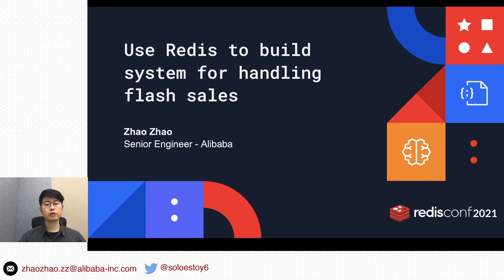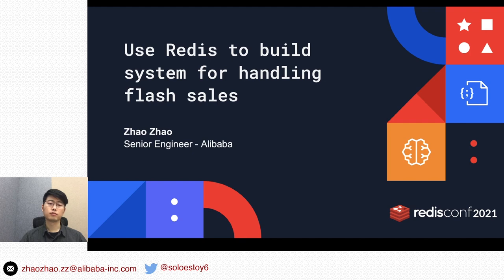Every year on November 11th, Alibaba holds the Double Eleven Shopping Festival. It's a big flash sales show. Today, my topic is how to use Redis to build the system for handling flash sales.